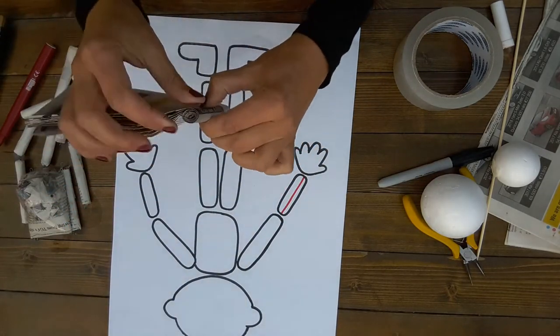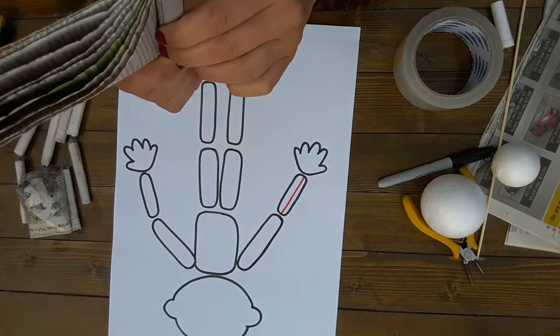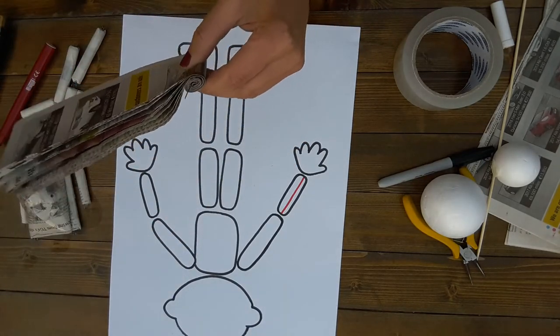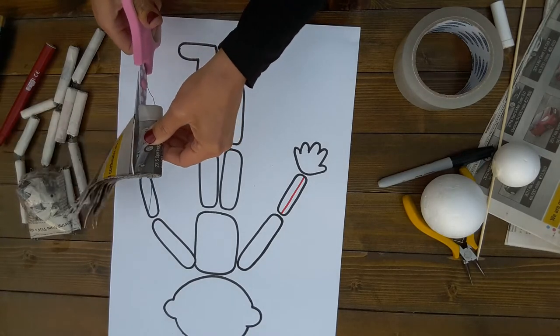And then we just start rolling it up. Try and keep the paper nice and tight. Okay, so when you're happy with the weight of the limb, which we'll be adding clothes onto anyway, you can just cut it here. You could keep going more if you'd like it to be thicker.